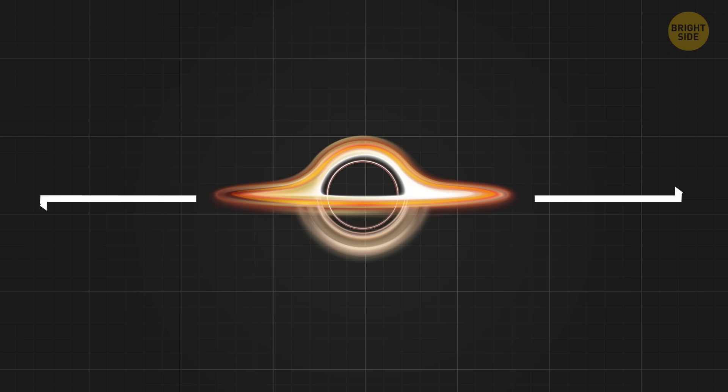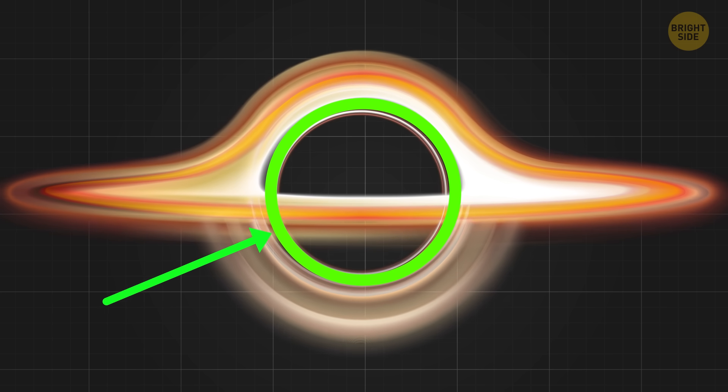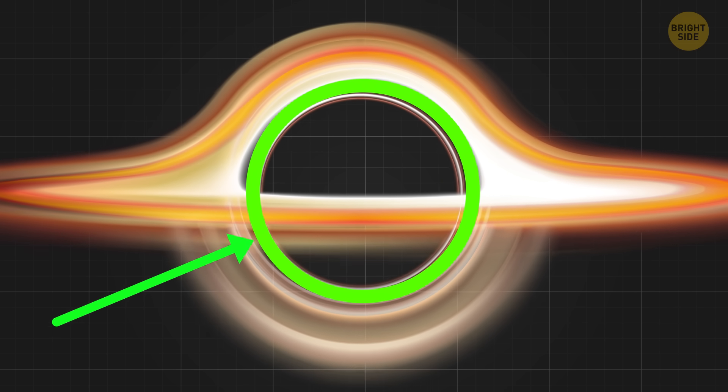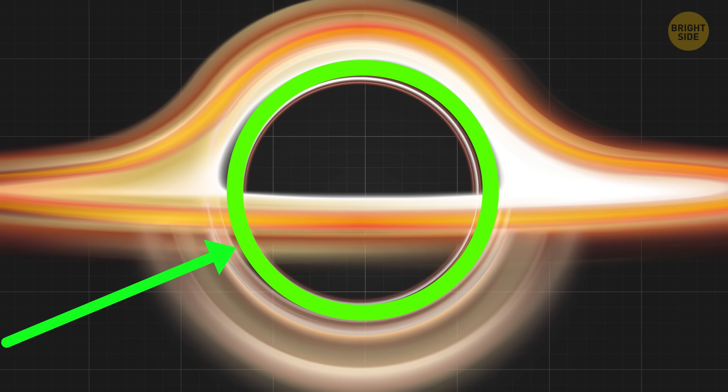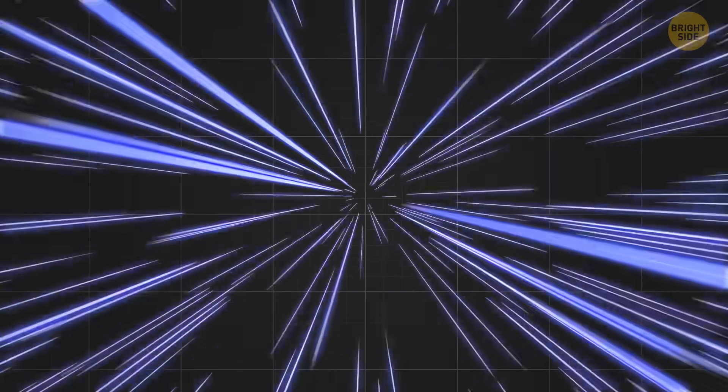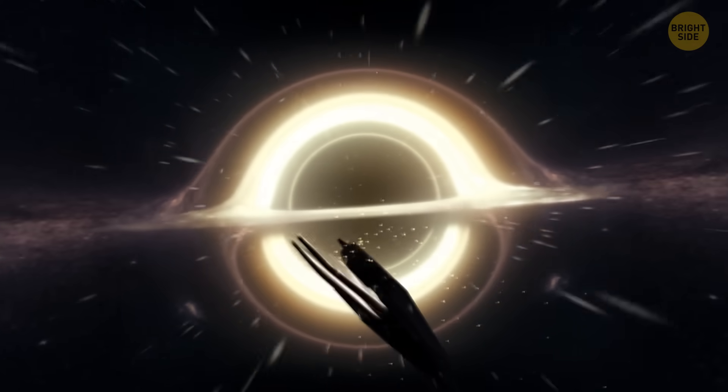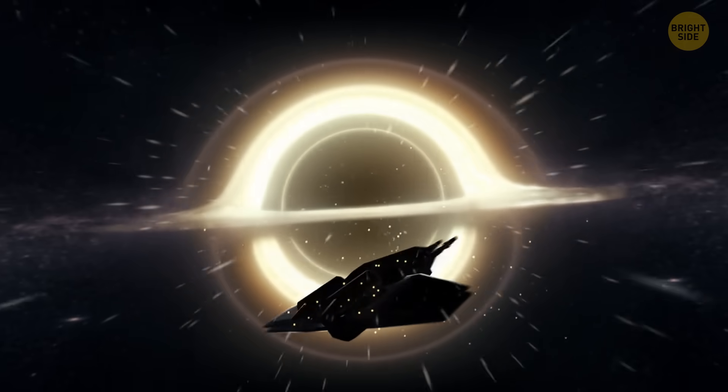But there are some problems with this. First, you can only travel into the black hole's past. Second, to enter the loop, you'd likely have to cross the event horizon, the point of no return around a black hole. To escape one, you'd have to travel faster than light, which is currently impossible. So, while black holes might hold the keys to time travel, the journey inside one might be your last.